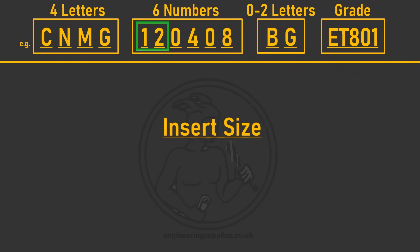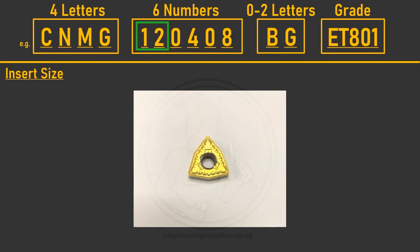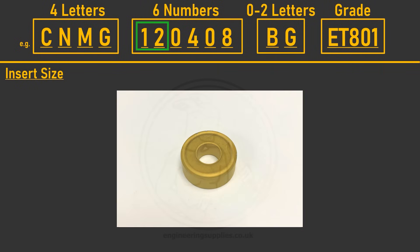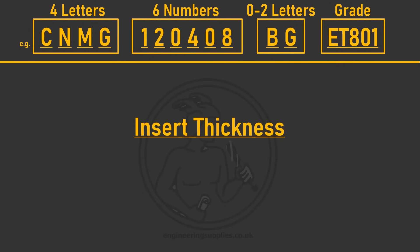The first two numbers represent the edge length. If the insert has a rounded point, you measure it as if it went to a sharp point. For a trigon-shaped W insert, you measure the edge length, not point to point. For a round R insert, the size is the diameter. In our example CNMG 120408, 12 signifies an edge length of approximately 12 millimeters.